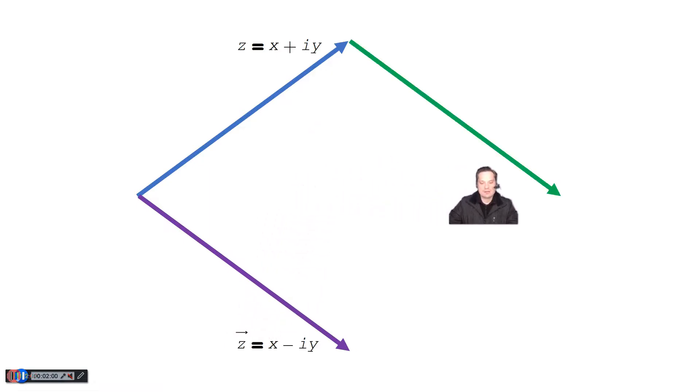That green arrow that you see here represents doing this. You take the purple arrow, and you translate it to the end of the blue arrow without changing the direction of it. So that green arrow represents x minus yi moved over.